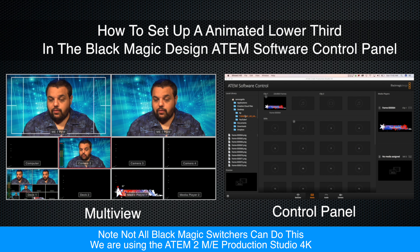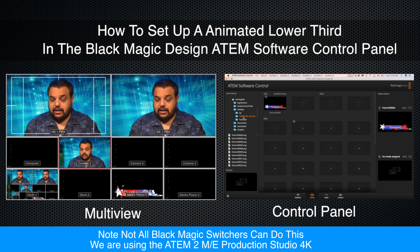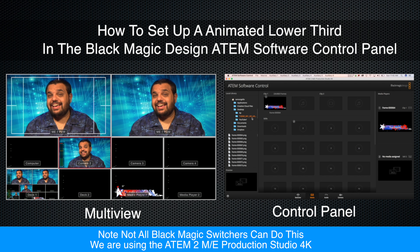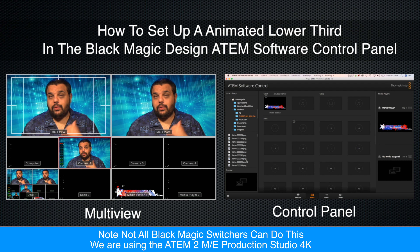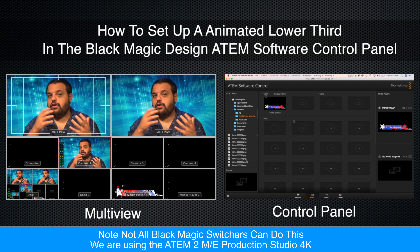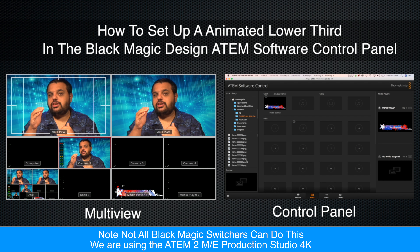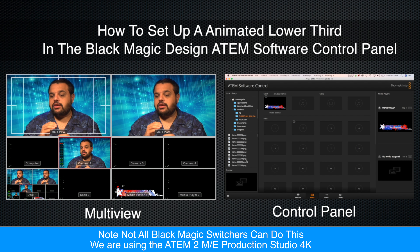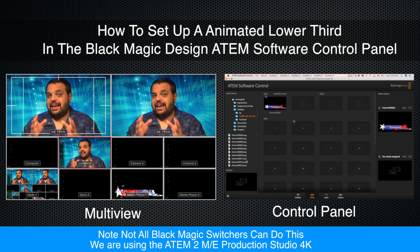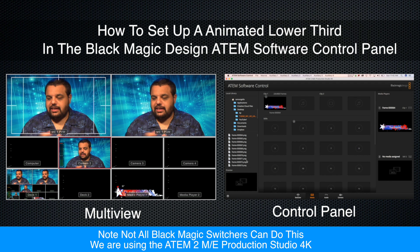Come over into your library and select the animated lower third — we've already built ours — and drag it into where it says Clip 1. It takes a little bit of time to load because it's an image sequence. We can't bring in a video file; we have to bring in an image sequence, meaning you have to export your video as different still images for this animated lower third technique to work.